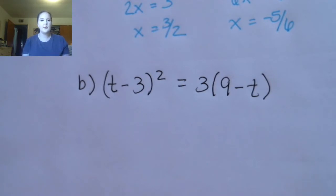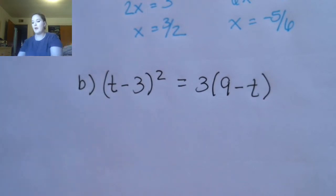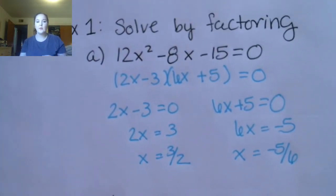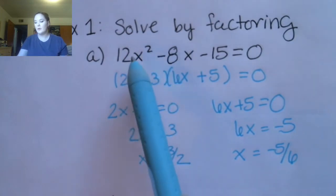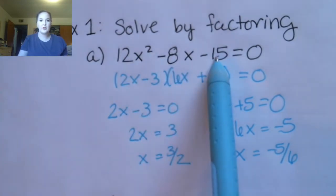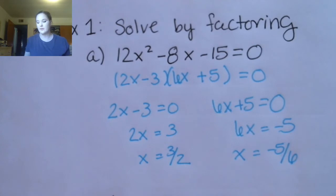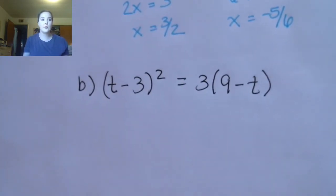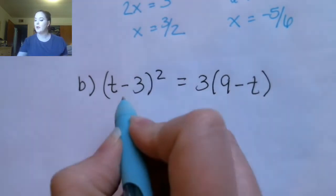This is not in a format that we would normally solve by factoring. When we look at the format of the previous problem, that equation is in what we call standard form, where we have the terms in descending order and then on the right side there's a zero. So in part b, the first thing we're going to do is try to put the equation into that form.